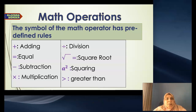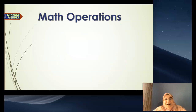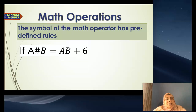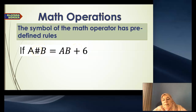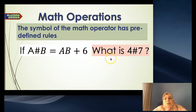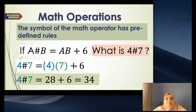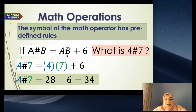Can you define one and have fun with your friend? We can redefine one together. Here we have A octothorpe B, defined as A times B plus 6. I define that symbol — me and my friend. So what is 4 octothorpe 7? That's just 4 times 7 plus 6, which is 28 plus 6, which is 34. We created this rule in advance and defined it.